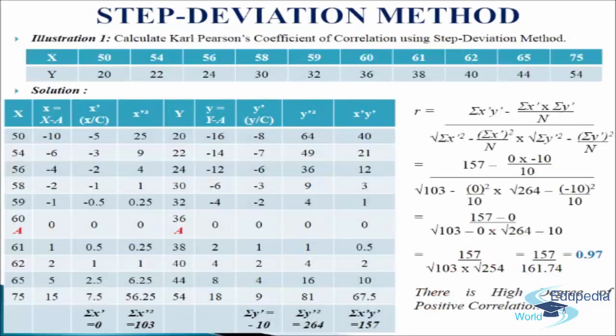Let us understand the step deviation method with the following illustration. In this illustration we have also taken the same data as used in illustration 1. We have to make a table of 9 columns. In the first column we will write x variables as we have done in the earlier illustrations. In this we have taken 60 as the assumed mean. In the second column we will write x equals to x minus a, so we will deduct 60 from x variables and get the following results.